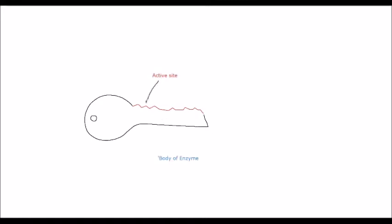As you can see, I've labeled them up. So the active site is here and the body of the enzyme is there. That active site is key for breaking down the molecules.